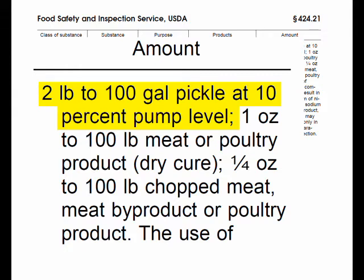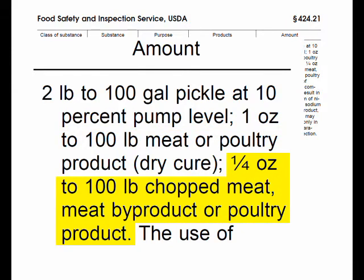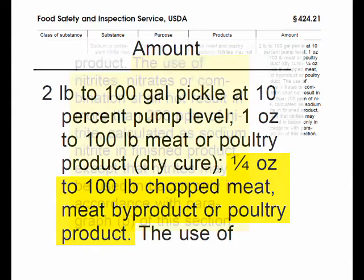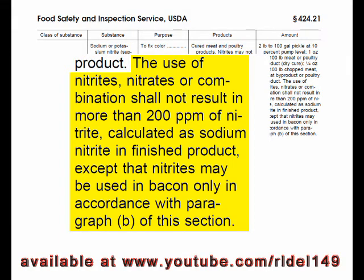Two pounds to 100 gallons of pickle at 10% pump level. One ounce to 100 pounds of meat or poultry product for dry cure. One quarter ounce to 100 pounds of chopped meat, sausage, meat byproduct, or poultry product. The use of nitrates or combinations shall not result in more than 200 parts per million of nitrite, calculated as sodium nitrite in a finished product.